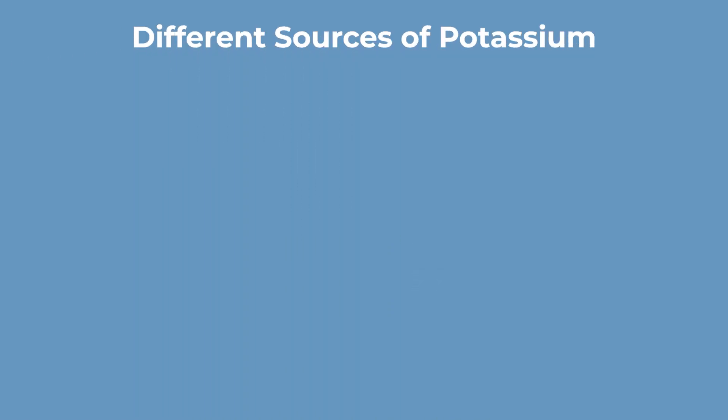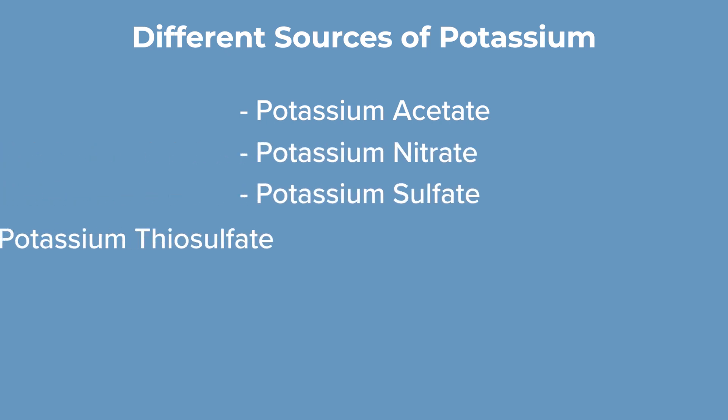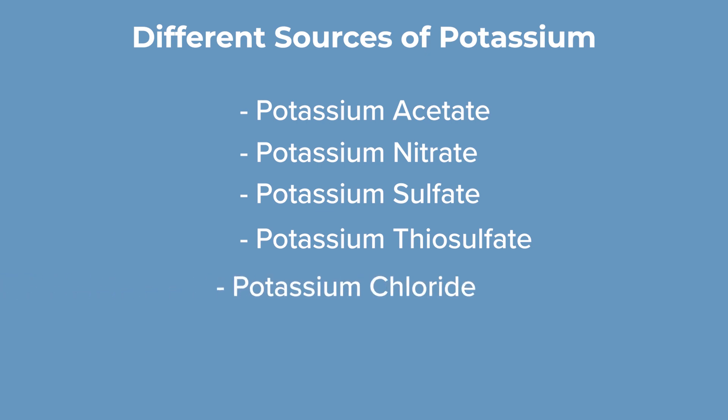Our Bio-K technology is potassium acetate. You may ask, what benefits does potassium acetate have in plant uptake? We have different forms of potassium that we can use as plant fertilizer. The sources of potassium include potassium acetate, potassium nitrate, potassium sulfate, potassium thiosulfate, and potassium chloride.